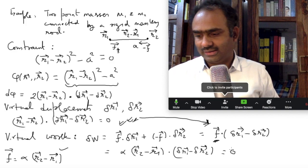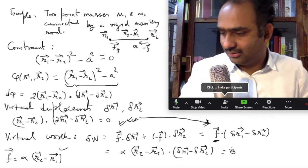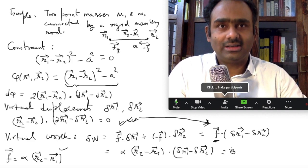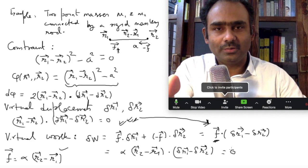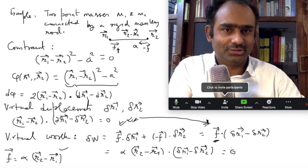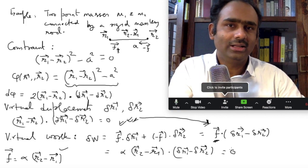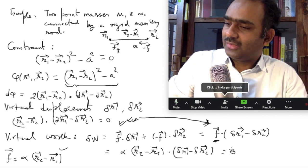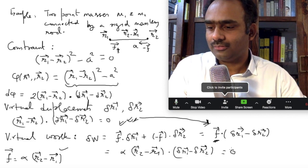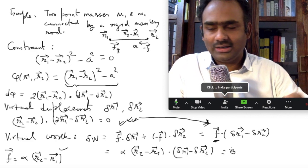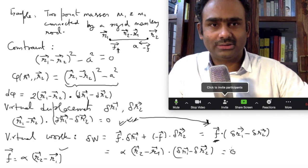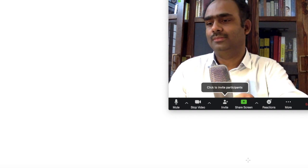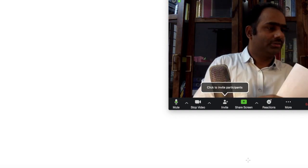This is another example we now know, and clearly if you are looking at a rigid body — which is just a collection of particles whose distances are fixed — the same argument applies. Make pairs and you will realize that the virtual work done in any virtual displacement would be zero.